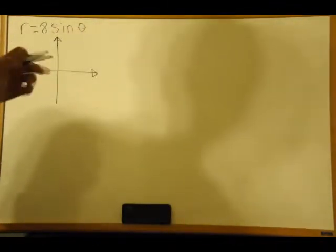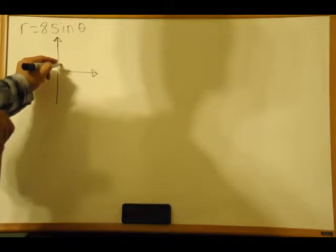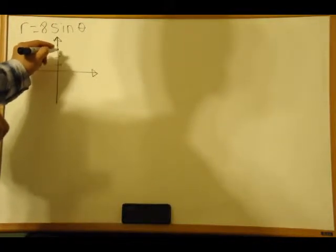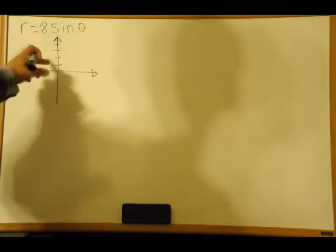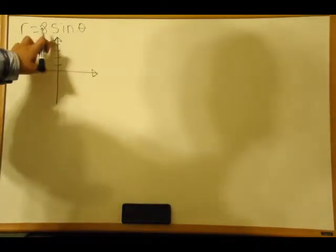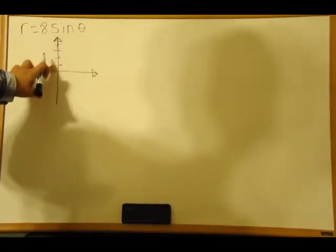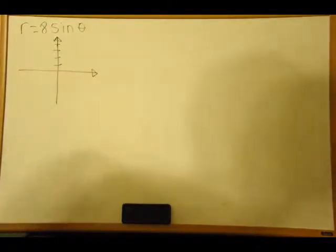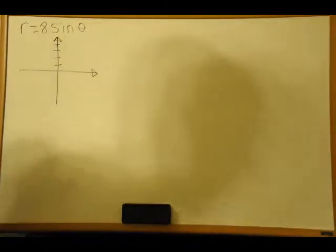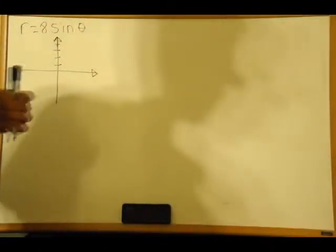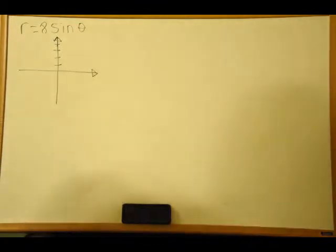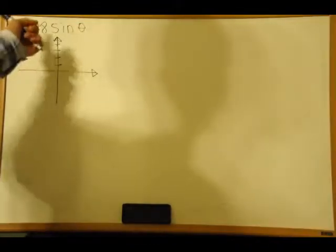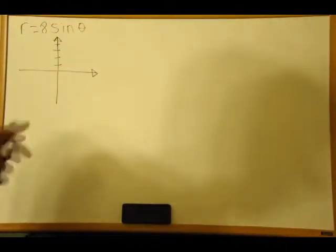So I'm going to mark some intervals. These are marked off in 2s, so it's 2, 4, 6, 8. Now you might recognize this as a special graph form — it's most likely in your calculus book: r = A sin θ, and that has a special form.